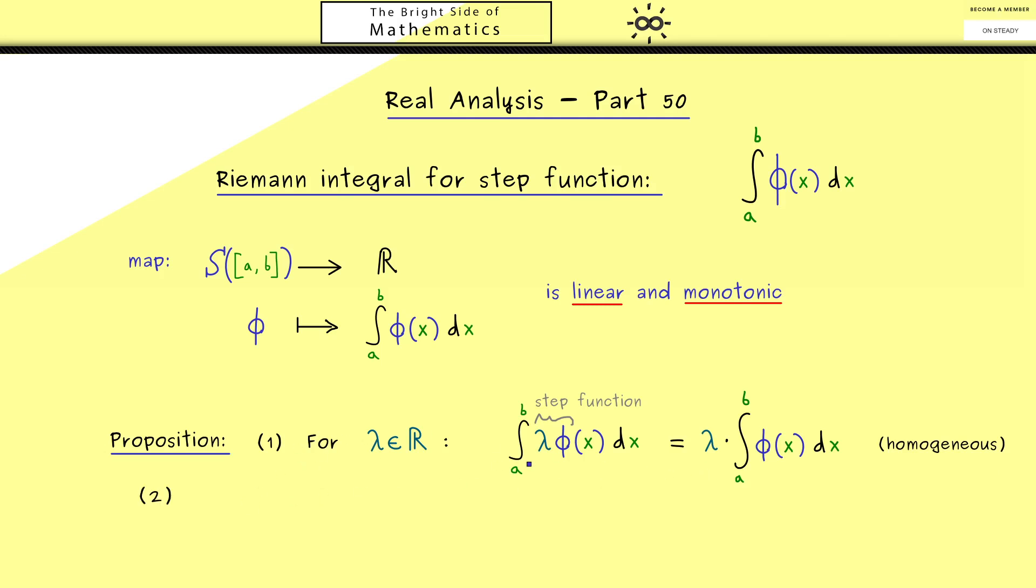The next property is not about scaling but about adding two step functions. Let's call the second step function ψ. Now we can just add both step functions which means we have φ plus ψ. This is a new step function. For us it's only important that we can calculate the orientated area again. We want the integral of the new step function. We can use the integrals of the original step functions. More precisely, we take the integral of the first step function plus the integral of the second step function. So what you can remember is we are allowed to pull out this addition sign. This property we call additive. These two properties together we usually call linear.